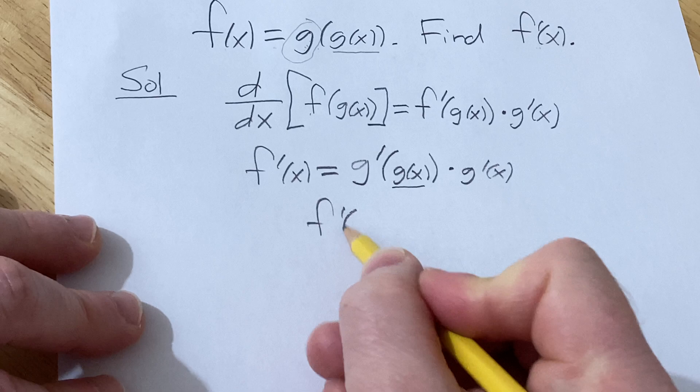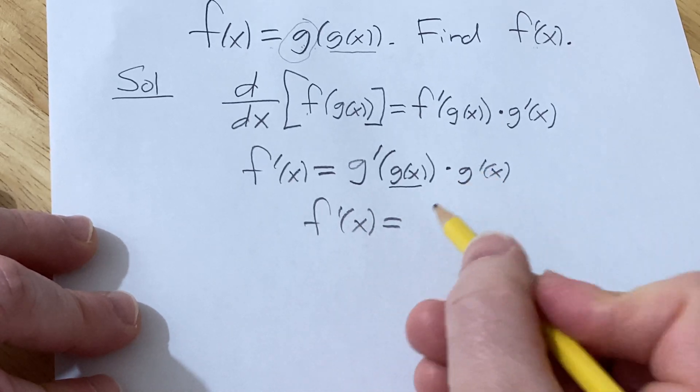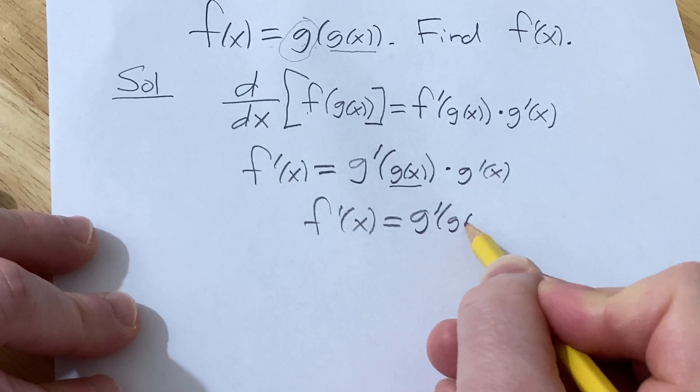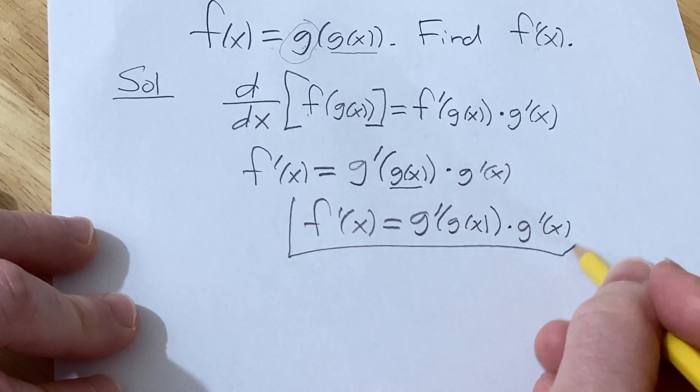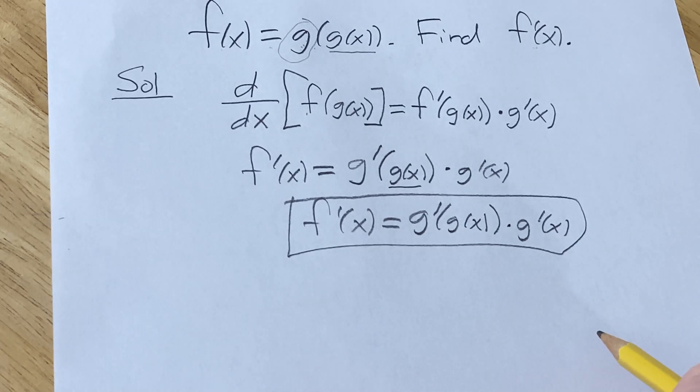That's pretty much it. So f prime of x is equal to g prime of g of x times g prime of x. And so that would be the derivative of f. I hope this has been helpful.